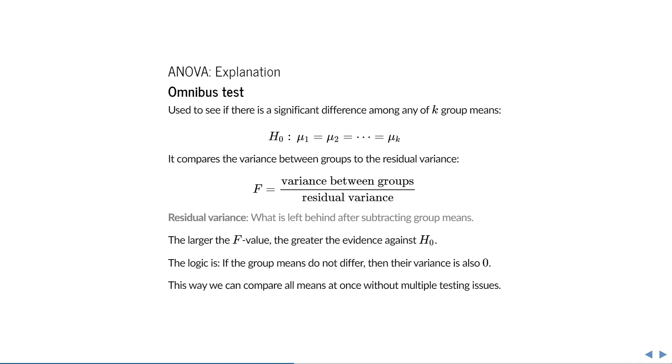The omnibus test is used to see if there is a significant difference among k group means. It starts by taking on a statement of no difference in group means. So the null hypothesis is that the mean of group 1 equals the mean of group 2 equals the mean of group 3, etc. But how do you compare all means at once?